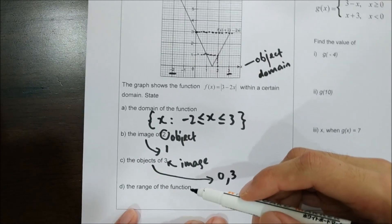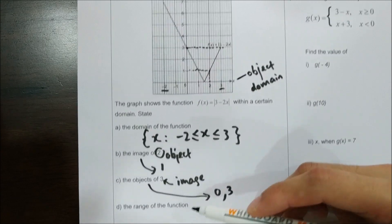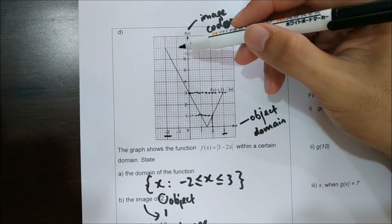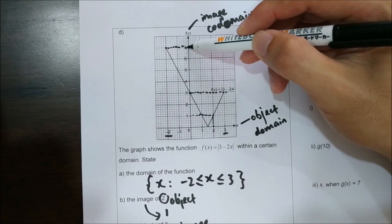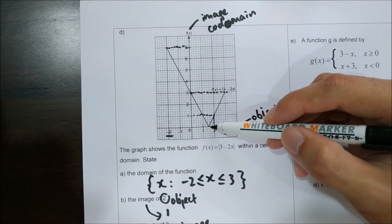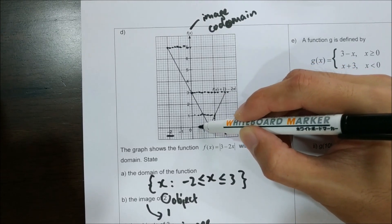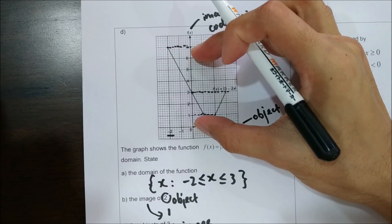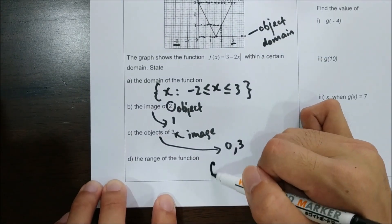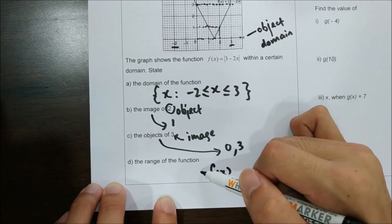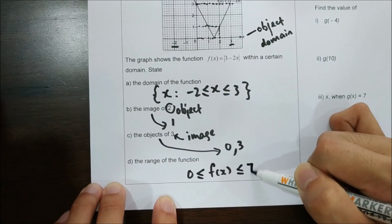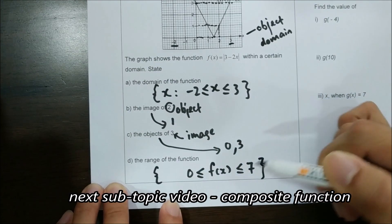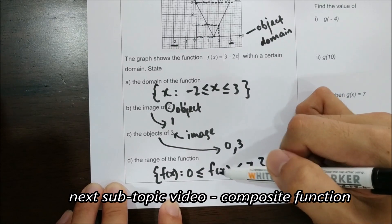Lastly, we find the range of the function. Range is a set, so we refer to the image on the y-axis. Looking at the two ends of the graph, the highest point corresponds to 7, and the lowest point corresponds to 0. So the image ranges from 0 to 7. We write f(x) such that 0 ≤ f(x) ≤ 7, and in set notation: {f(x) : 0 ≤ f(x) ≤ 7}.